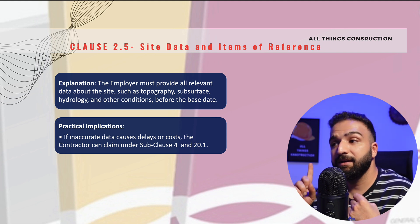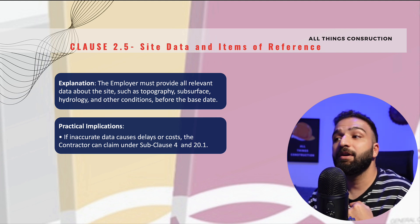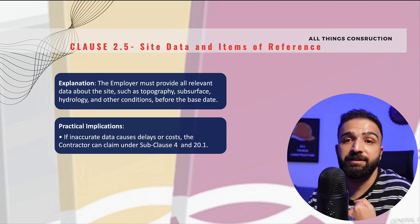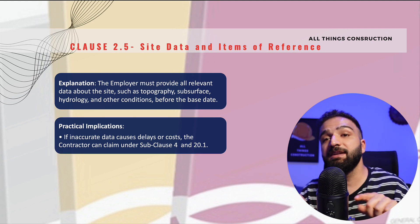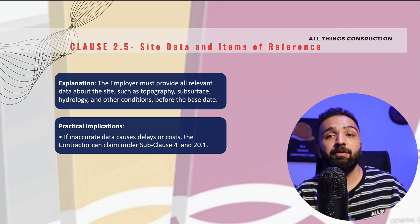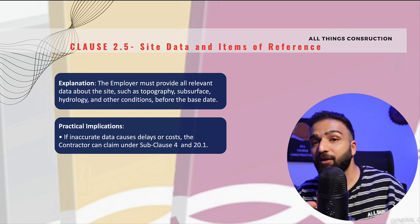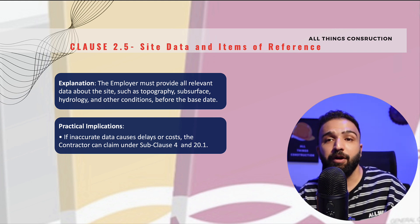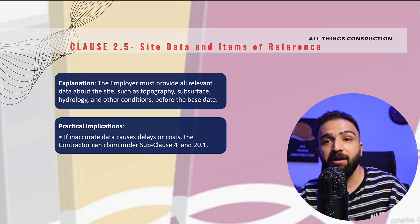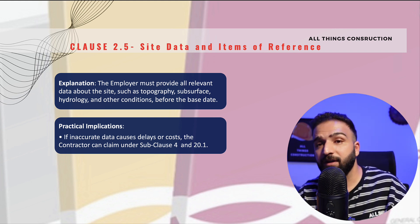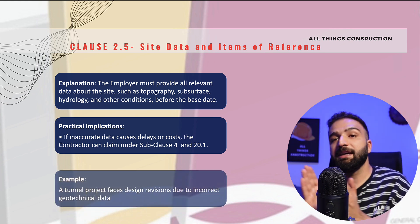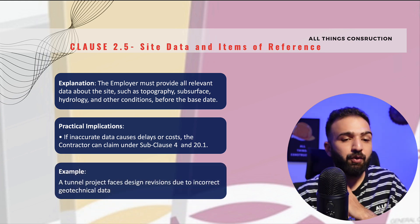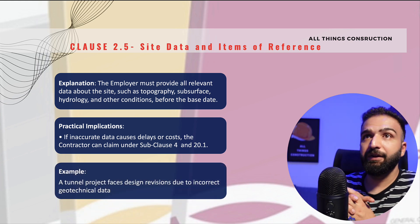The practical implication is that the data must be reliable, as this will avoid discrepancies during construction. If the data provided by the employer is found to be inaccurate, the contractor is allowed to claim for additional time and money under Clause 4.12 or even Clause 20.1 of the Red Book.